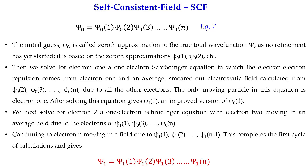Now we solve for electron 1 — that is, we solve for psi_0(1) — using a one-electron Schrödinger equation in which the electron-electron repulsion is replaced by the average electrostatic field of all other electrons. We are solving for the wave function of electron 1, assuming it faces the repulsion of the average cloud of all other electrons. The field from those electrons enters this term in the equation.